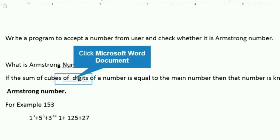What is an Armstrong number? If the sum of the cubes of digits of a number is equal to the main number, that number is known as an Armstrong number. For example, 153 has 3 digits: 1, 5, and 3.